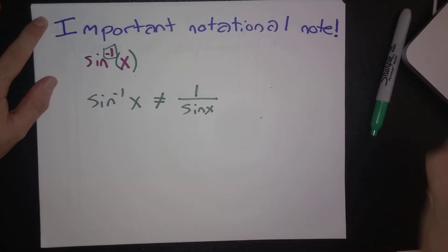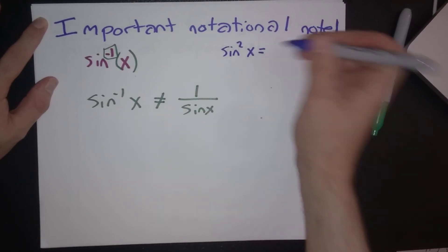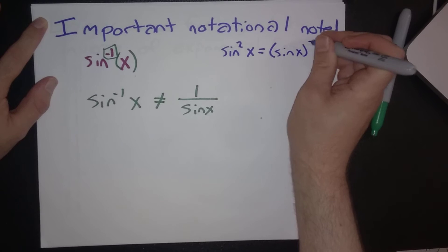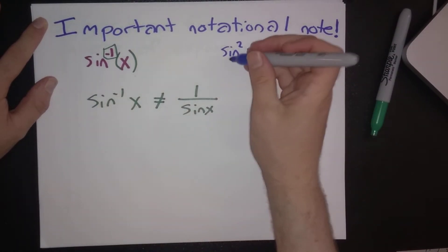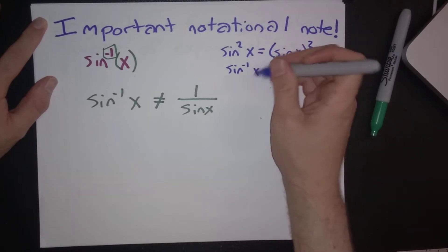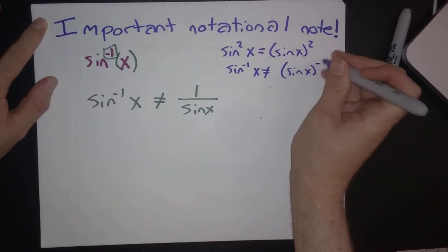So the point here is that if you have sine squared of x, this does mean just take your sine function and square it. But if you have sine minus 1 of x, this does not mean sine x to the minus 1 power, which would be 1 over sine x.